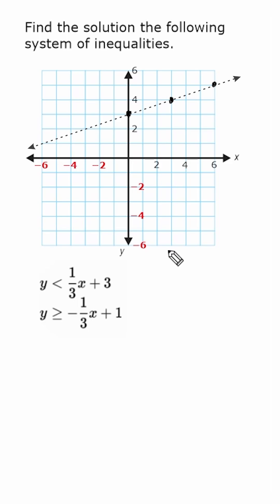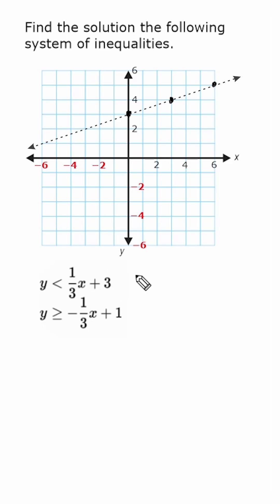We should notice that our line is a dotted line. That means for this specific inequality we cannot use any points directly on that line to satisfy the inequality. Now let's go ahead and graph our second inequality.